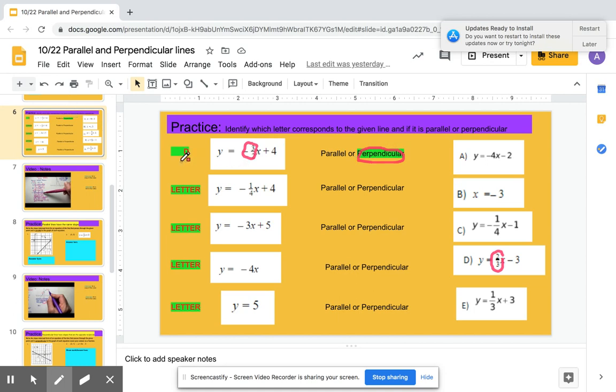And letter D corresponds with this question. The next example is y equals negative 1 fourth x plus 4. So I want to recognize that my slope is negative 1 fourth.